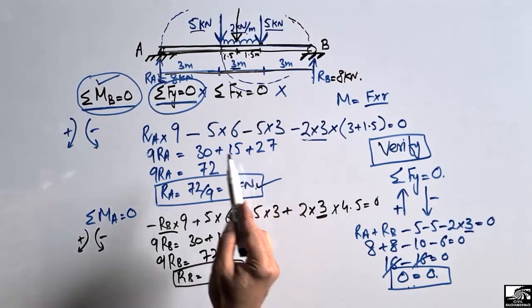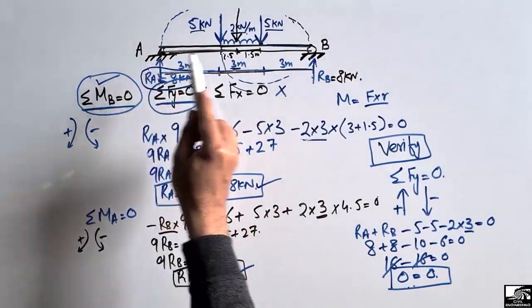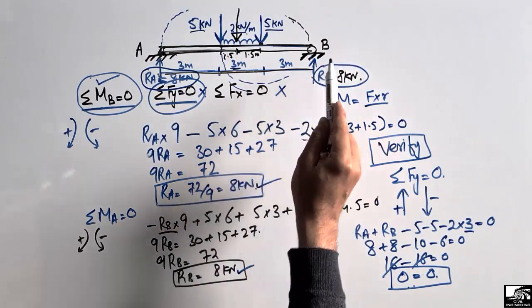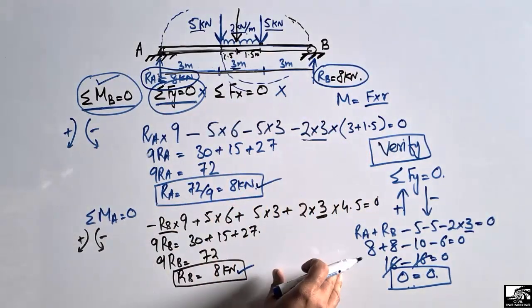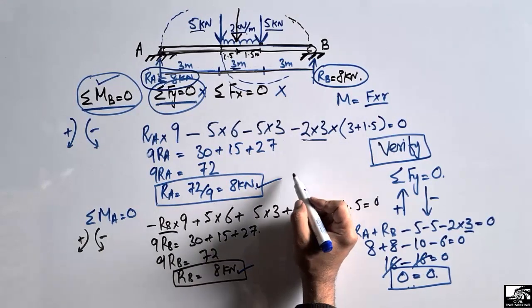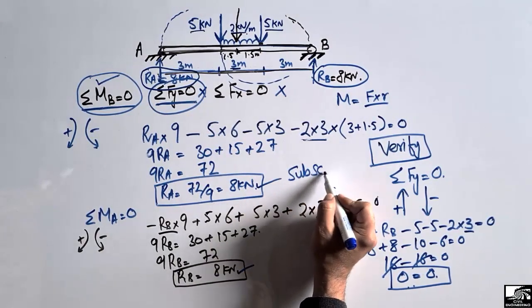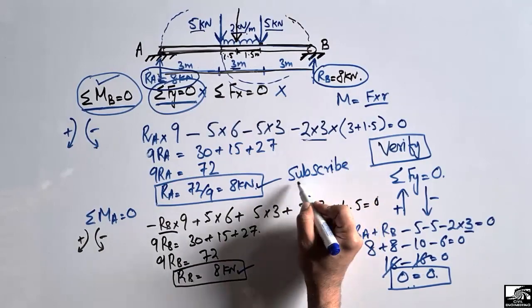We have found the support reactions — both Ra and Rb are 8 kN, acting upward. Hope you understand how to find support reactions for a beam. Don't forget to subscribe to our channel. Thank you for watching.